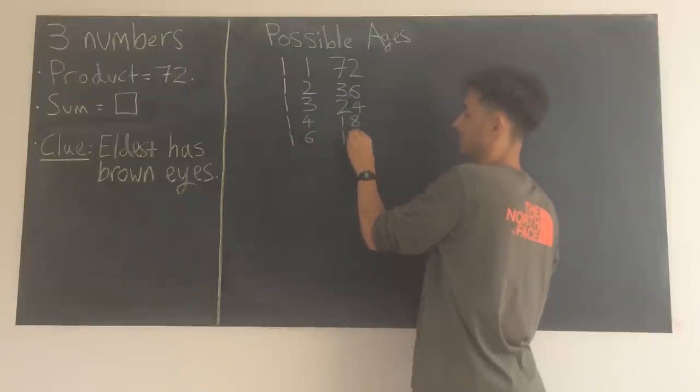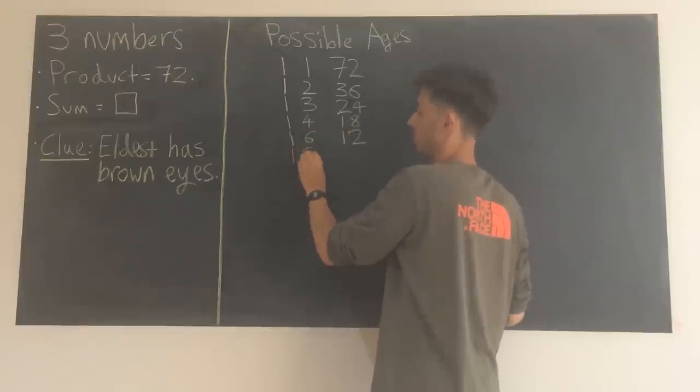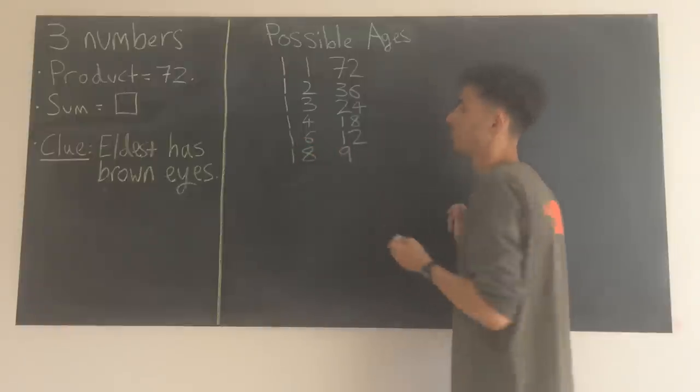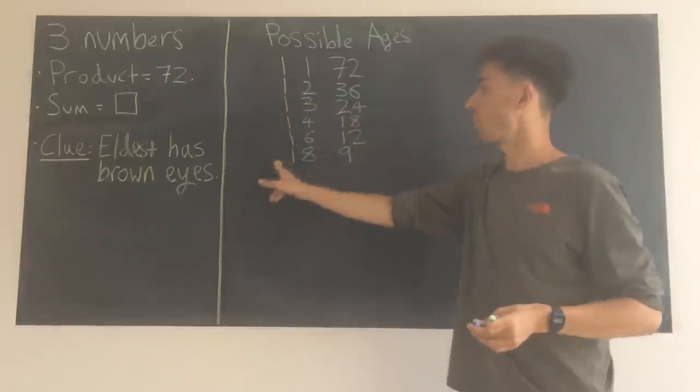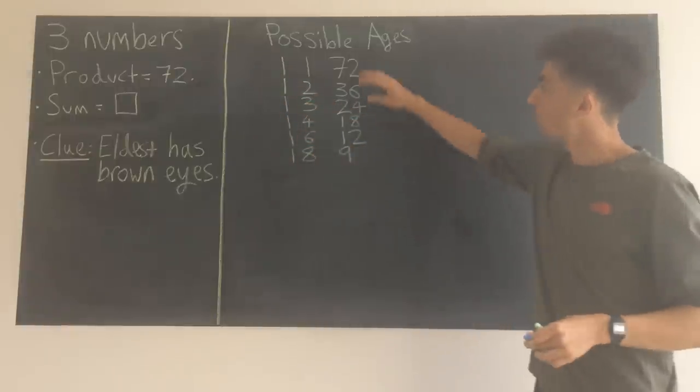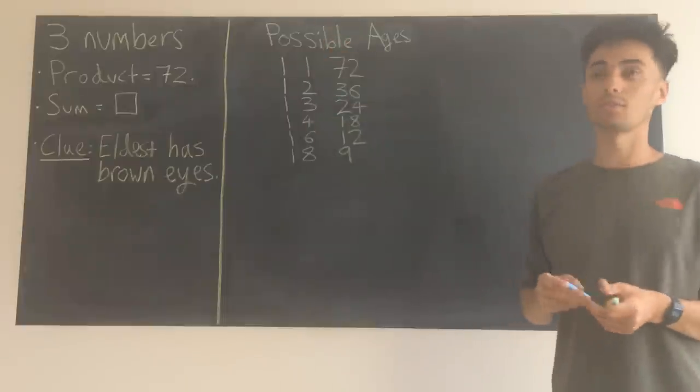These are all of the options with 1 as the first age, because they're the factor pairs for 72. Next we can move on to some combinations with 2 as the first age then.